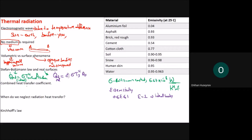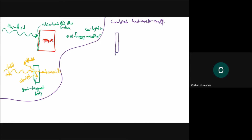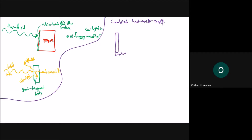Now let's discuss the combined heat transfer coefficient. Consider the window of a room: from the inside, heat transfer involves conduction, but from the outside you have heat loss by convection and by radiation simultaneously.